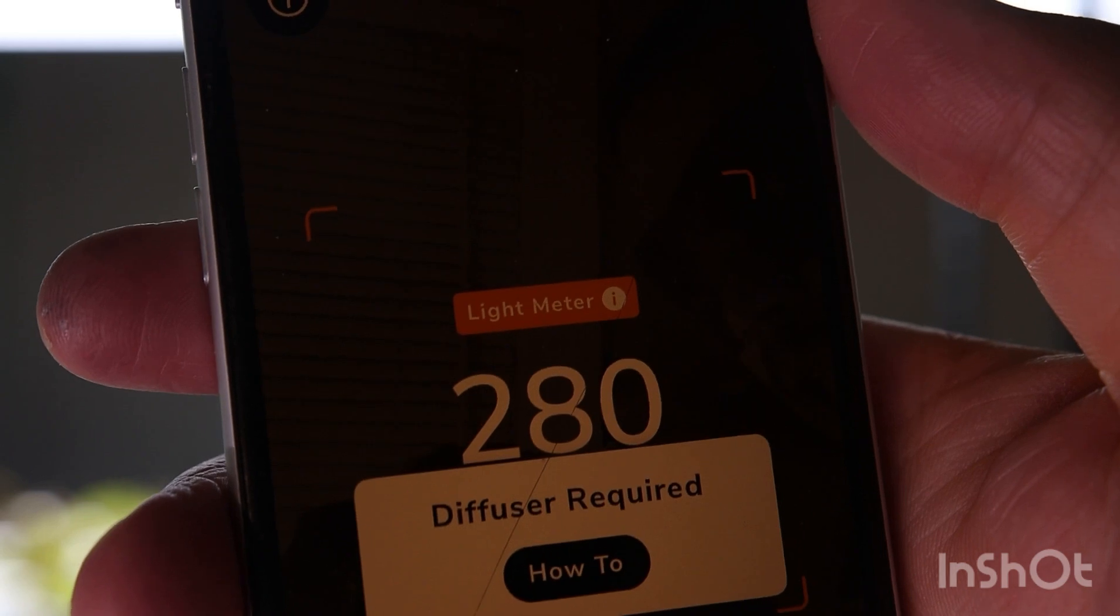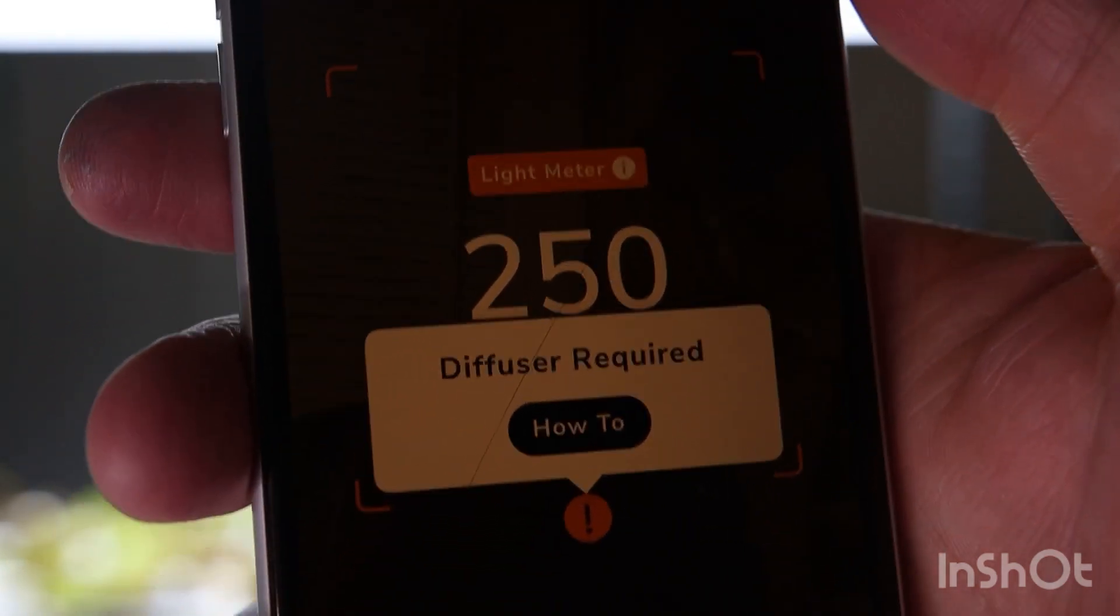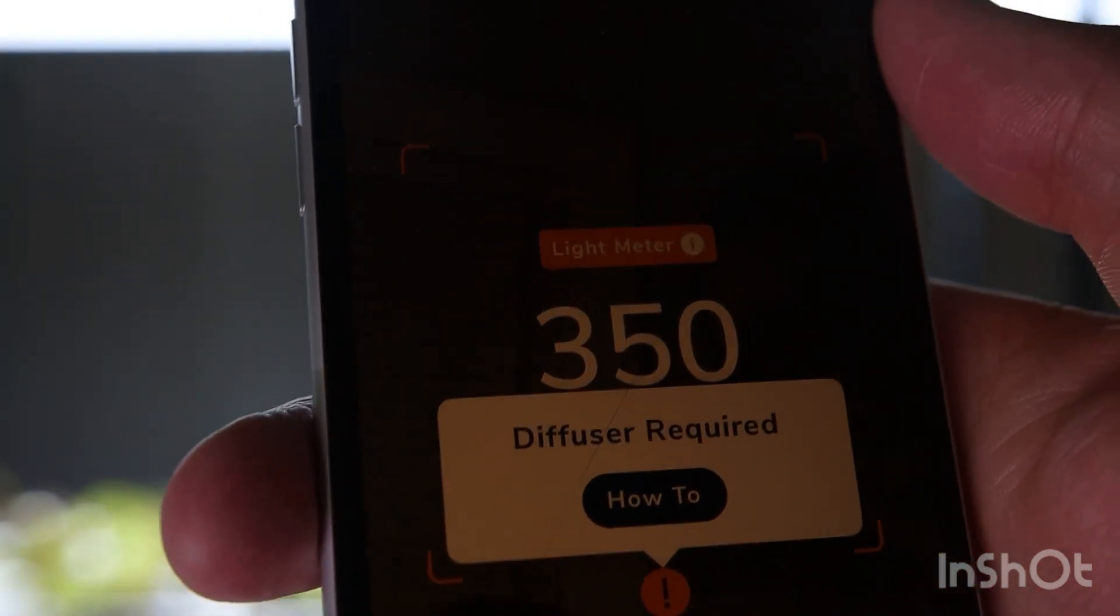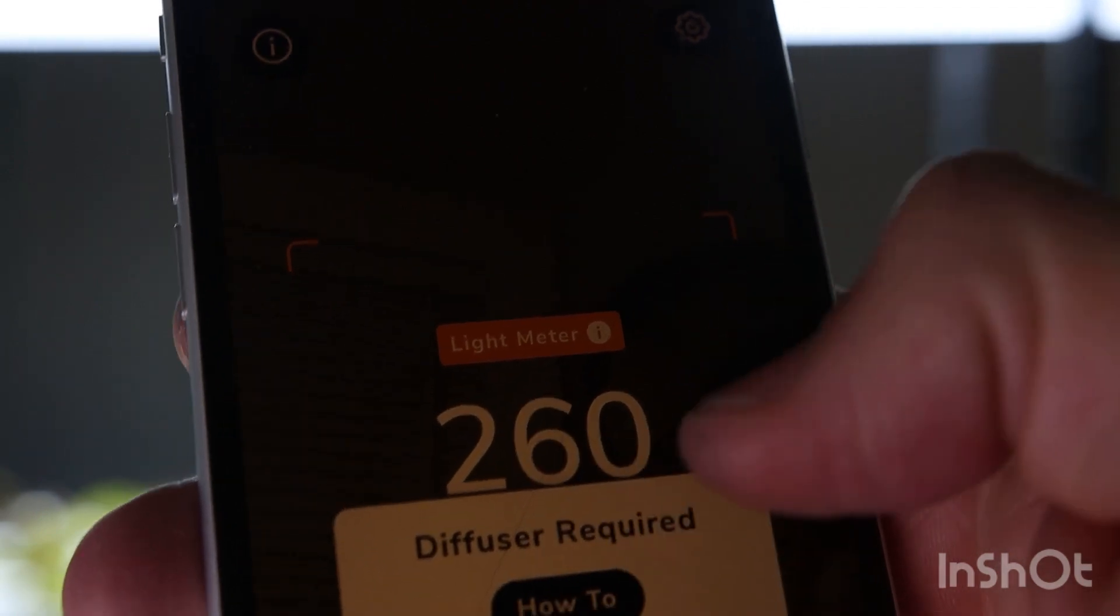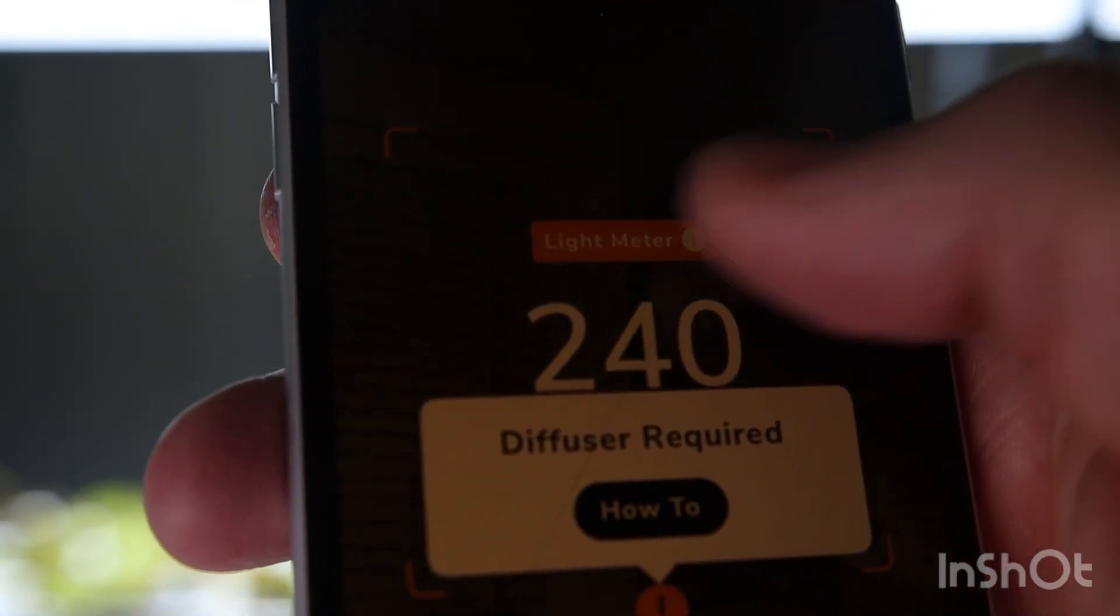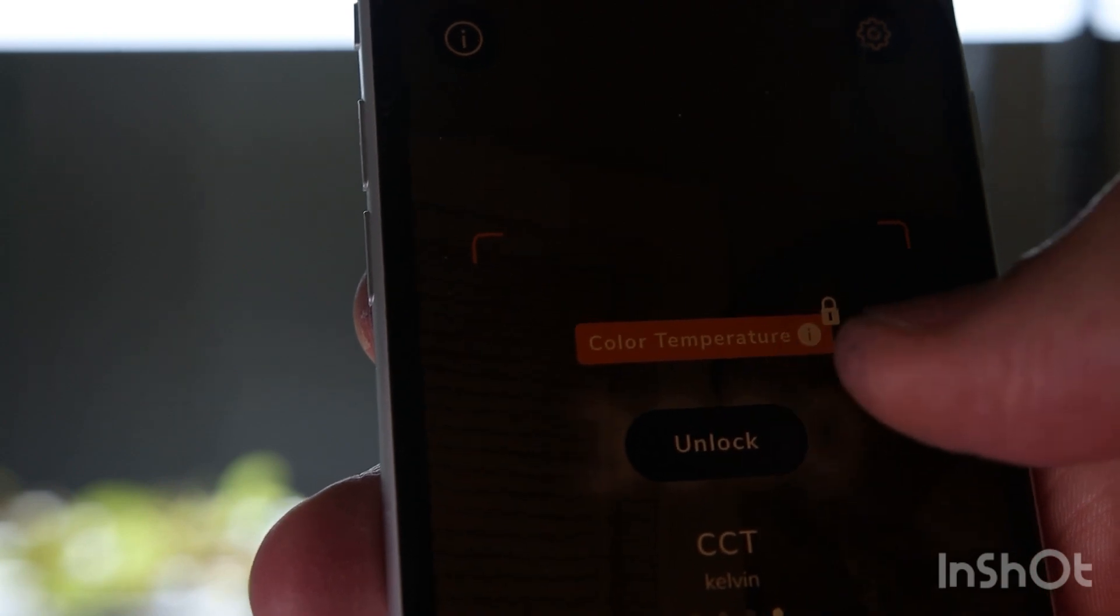We use a free app. The one I'm using is Photone on iPhone and I know Android users will have some sort of equivalent out there. It's free. When you go into it it'll say diffuser required and then it'll be like these different options for what you're measuring.